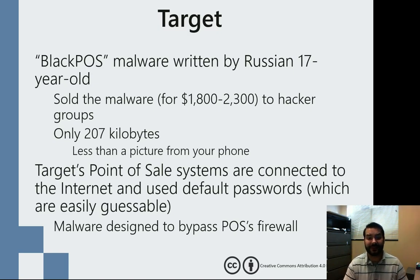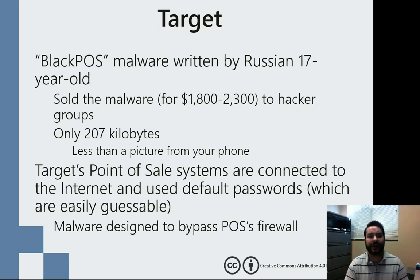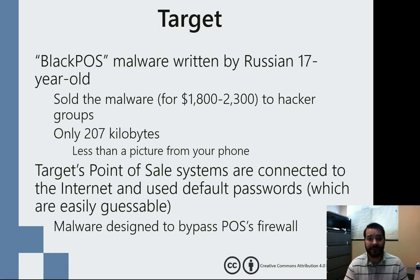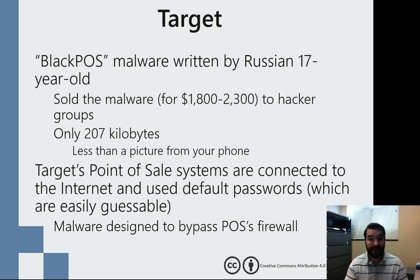Now, as a quick history lesson — what happened with Target? There was this malware created. Malware is just a shortened version of malicious software. Malware is not the same as a virus; a virus is malware, but malware is the umbrella term for all malicious software. A 17-year-old Russian had developed this software and was selling it on the black market for roughly about $2,000.